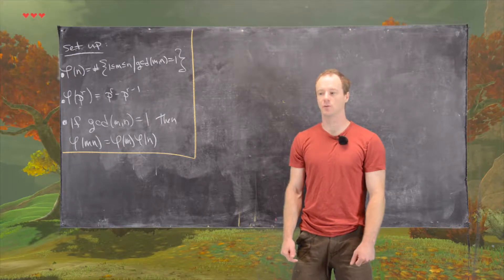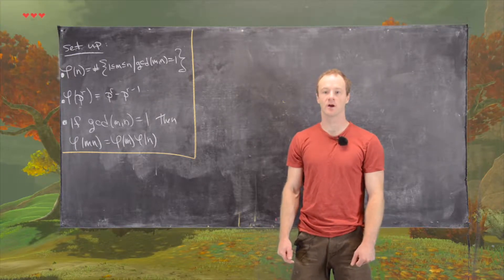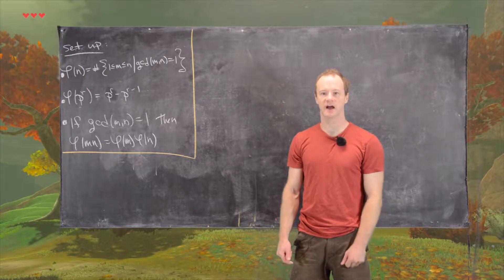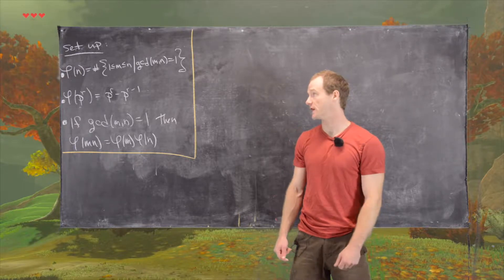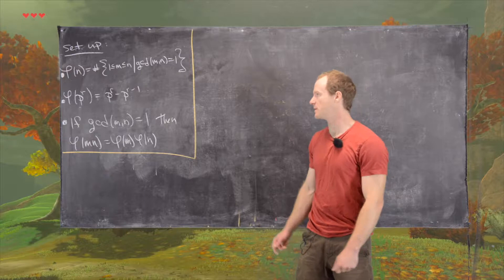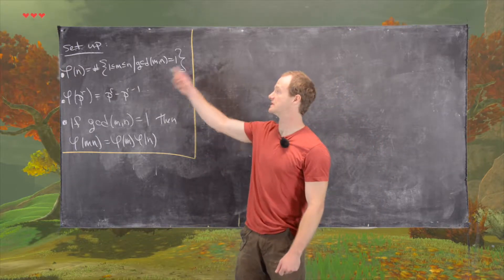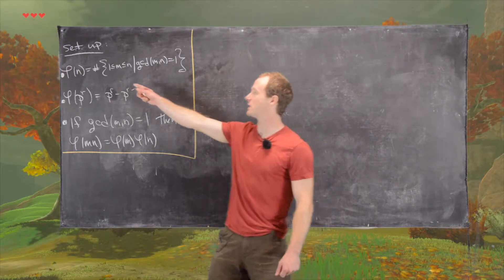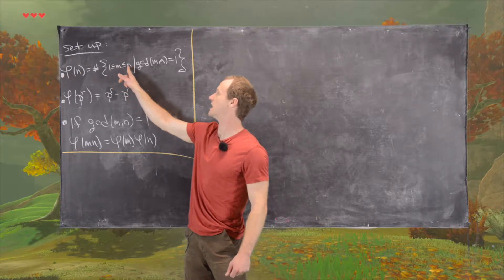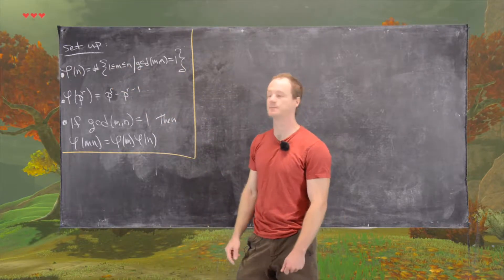In this video we'll prove a formula for calculating phi of n given a prime factorization of n. So let's recall we have the following setup. Phi of n, Euler's totient function, is defined as the number of positive integers between 1 and n that are relatively prime to n.